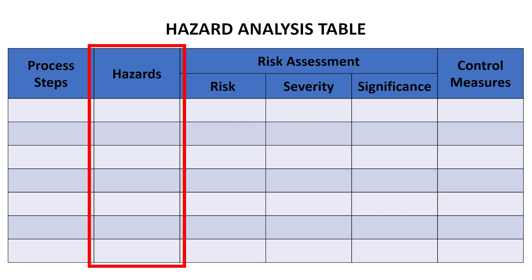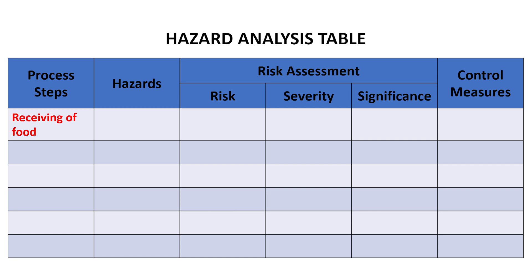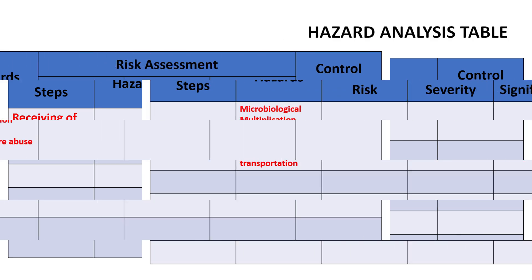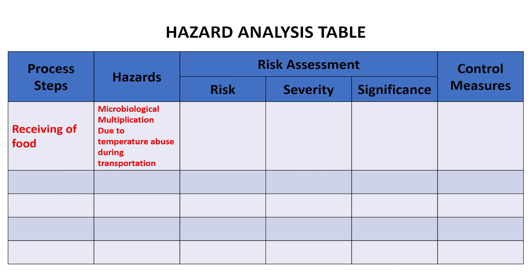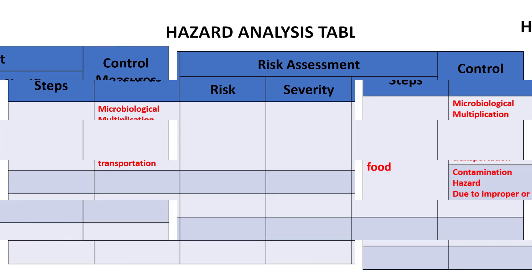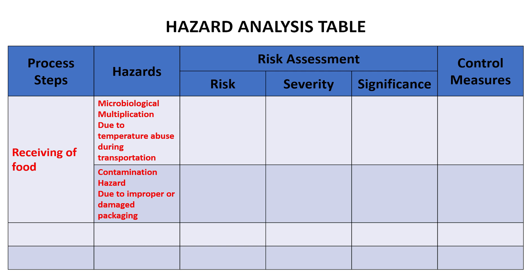For example, taking the example of a kitchen or catering industry at the receiving stage, there can be multiple hazards. In this case, I am writing the hazard of microbiological multiplication — if receiving is not done at the correct temperature, existing microorganisms in the raw material will start to multiply during transportation, which is a hazard. Another potential hazard at this stage is contamination: if food is not secured properly during transportation there can be physical, chemical, and cross-contamination from other food items.